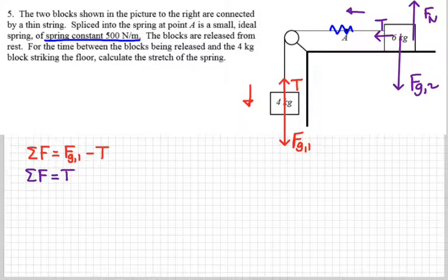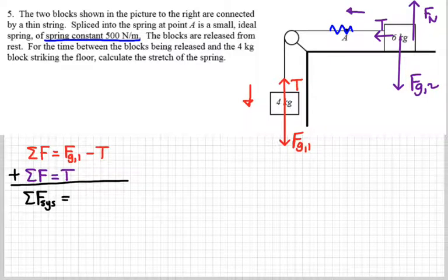Then we do that trick where we add the two equations together to get the net force on the system as a whole. So the tensions would cancel out, leaving me with just the weight of the one that's hanging. So just FG1.